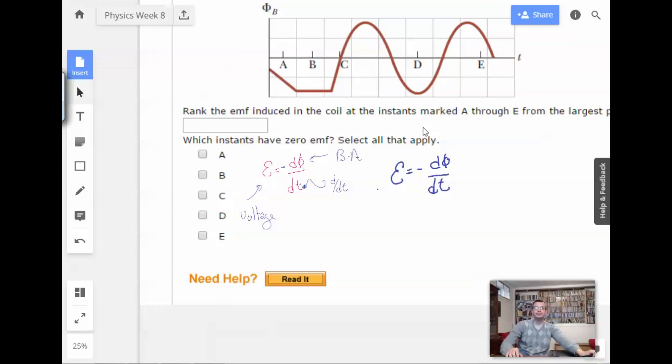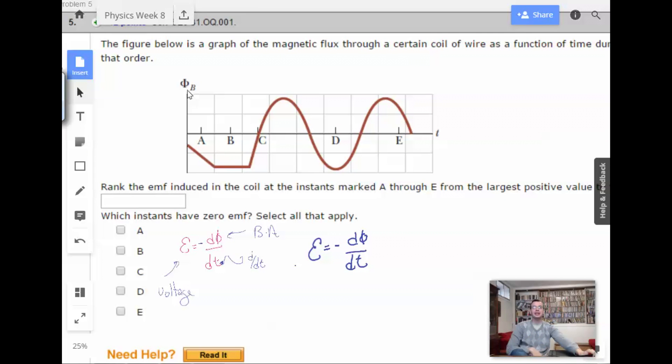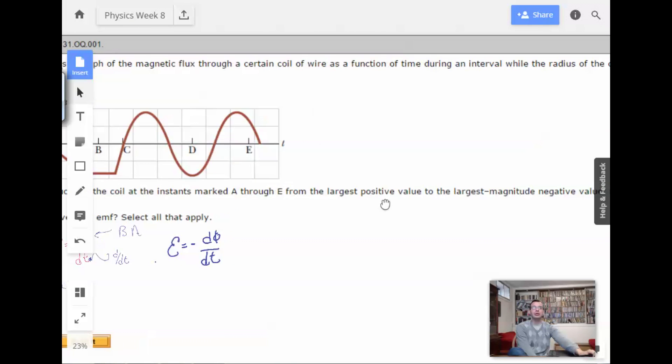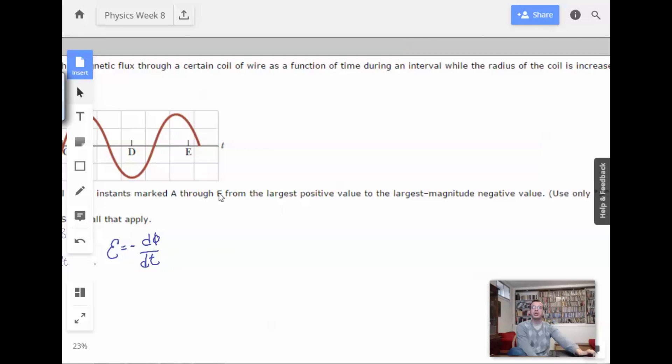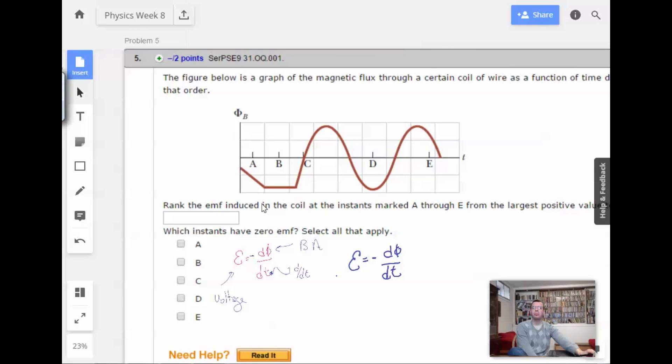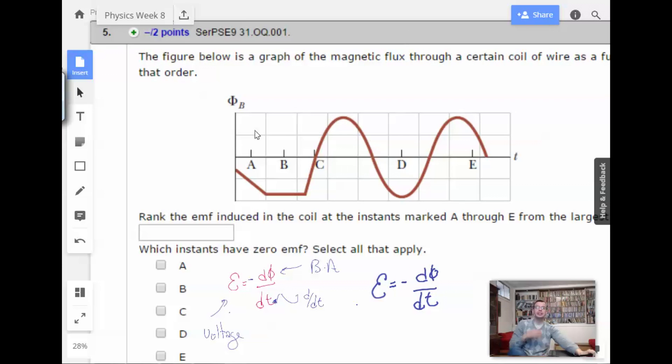So this is a graph of flux. This is graph of time. We have flux, we have time. So now we just need to look at these all in order. So we want from the largest positive value to the largest magnitude negative value. Okay. So I think this one is largest to smallest. So let's see here.